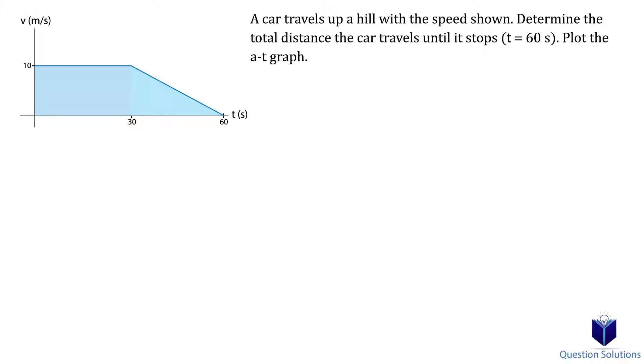The first section is a rectangle, so it's simply 10 multiplied by 30. For the next section, which is a triangle, the bottom length is 60 minus 30 and the height is 10, so we have one-half of 30 multiplied by 10. The total distance the car traveled is the addition of those two sections, which is 450 meters.